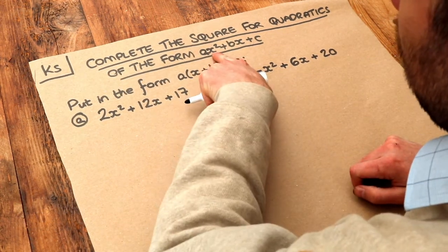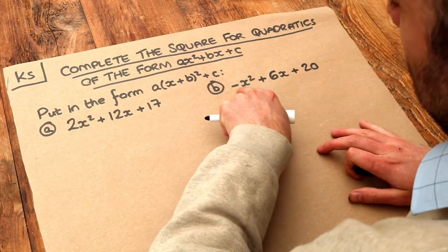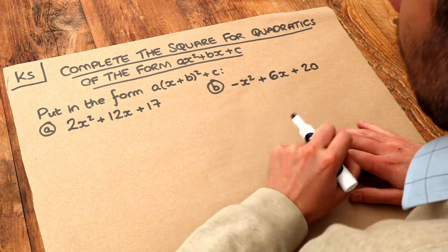So where we have a number in front of the x squared, just like we have a number in front of the x squared here and we've kind of implicitly got minus 1 in front of that x squared there.